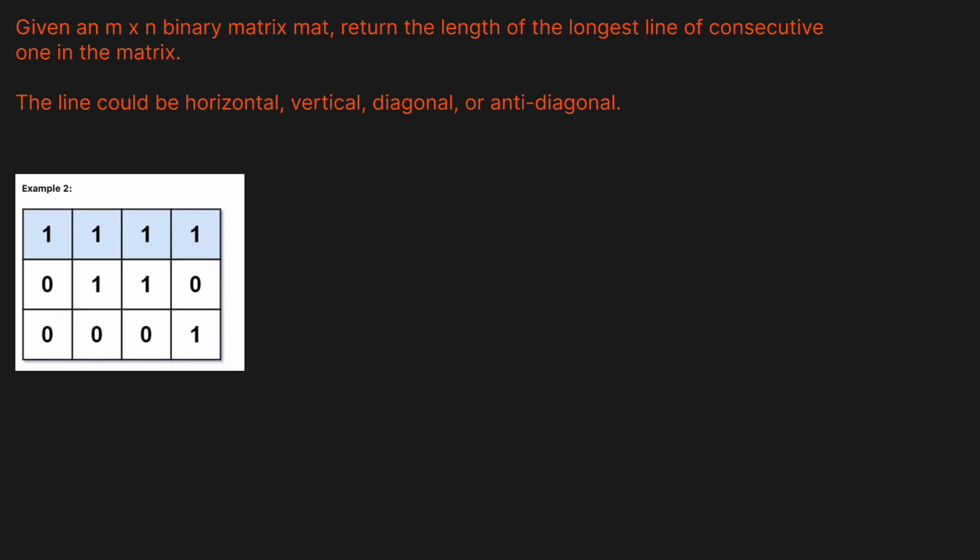Welcome back to the Cracking Van YouTube channel. Today we're going to be solving LeetCode problem 562: Longest Line of Consecutive Ones in a Matrix. Given an M by N binary matrix, return the length of the longest line of consecutive ones in the matrix. This line could be horizontal, vertical, diagonal, or anti-diagonal.